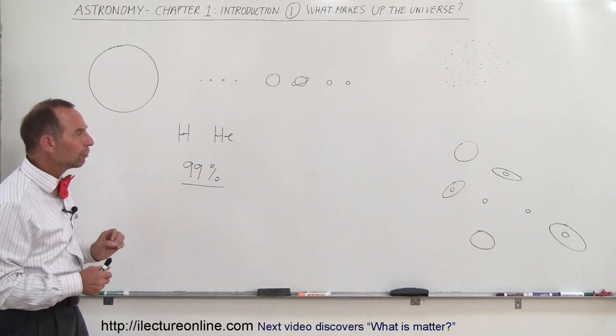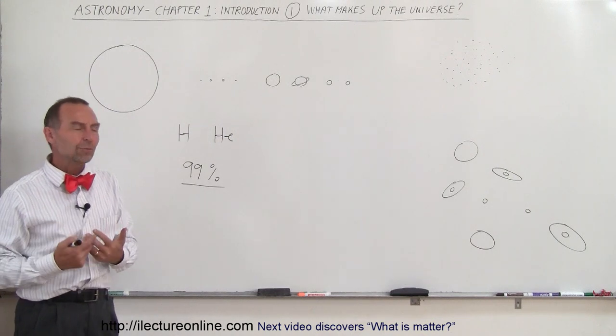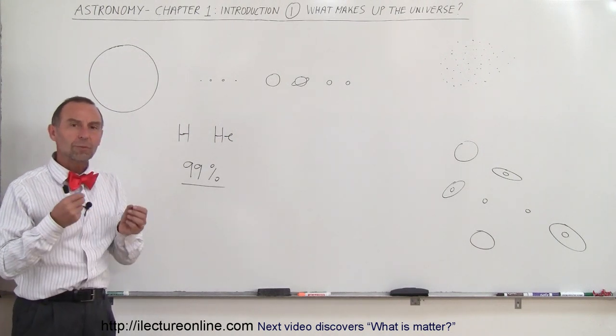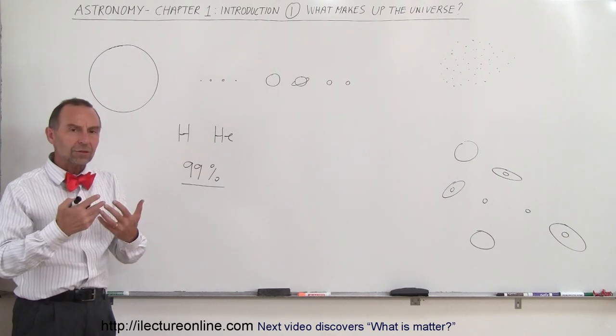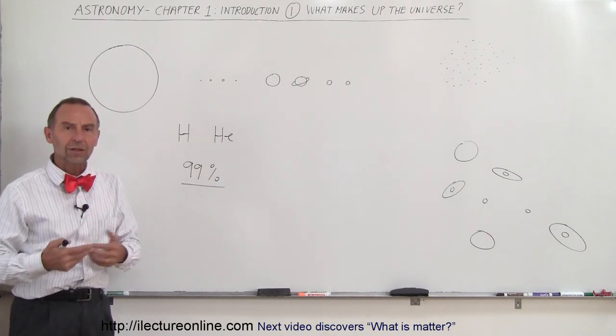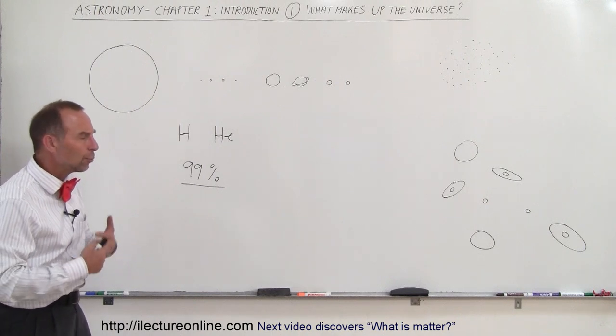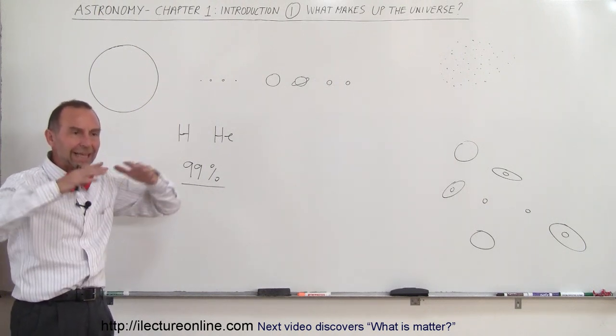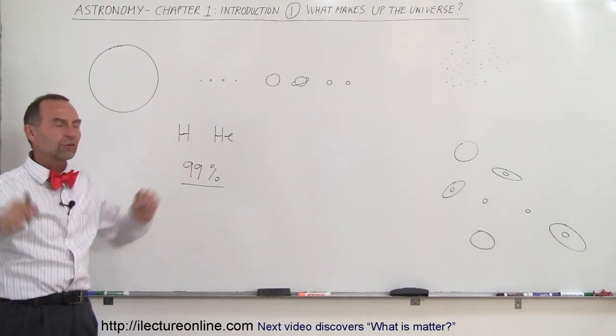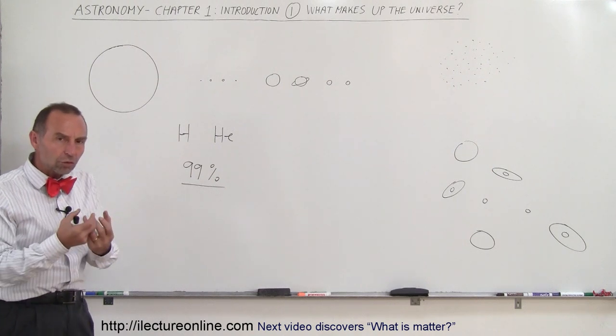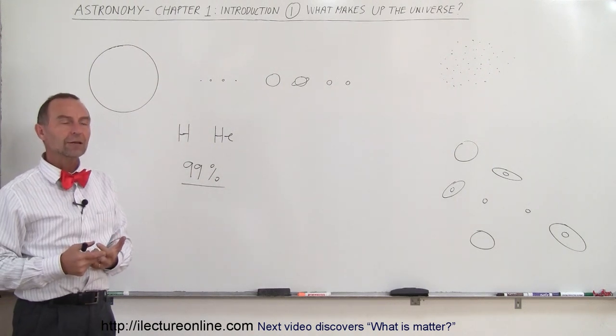There's another aspect of the universe we don't think about too much. A lot of the universe is made up of pure energy: light, x-rays, gamma rays, ultraviolet radiation, and radio waves. That energy flowing through the universe at the speed of light is also a component of what the universe is made out of.